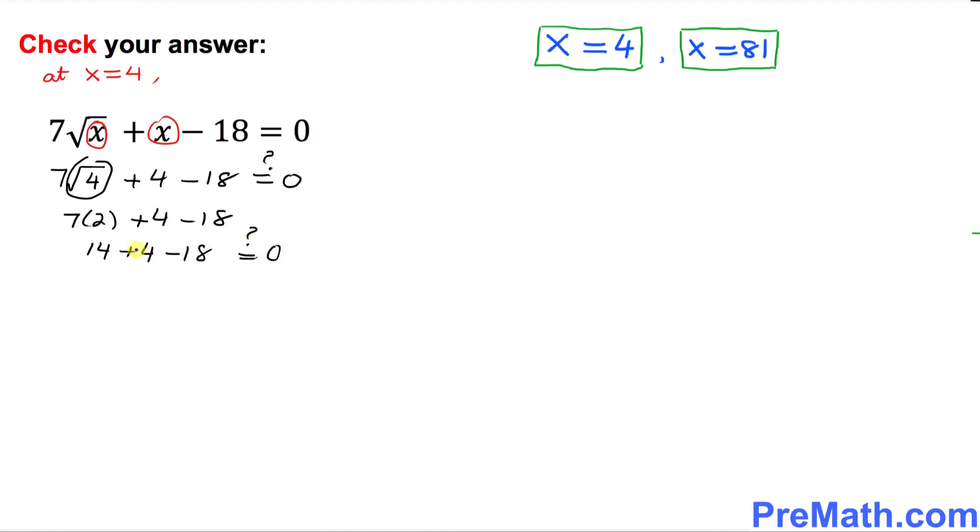Is it equal to zero? Of course the left hand side equal to zero and of course the right hand side is zero. My question is is this statement true? Yes, indeed. This statement is true. That means our answer is checked. So x equal to 4 is our good answer.